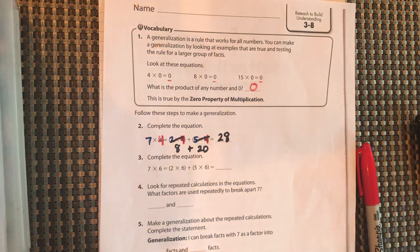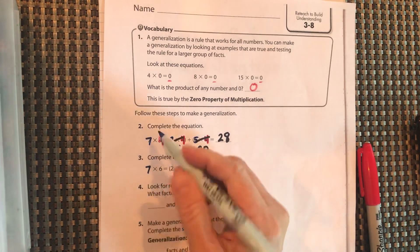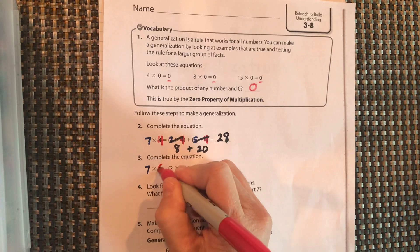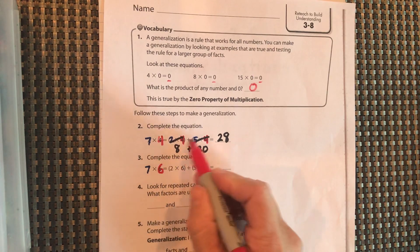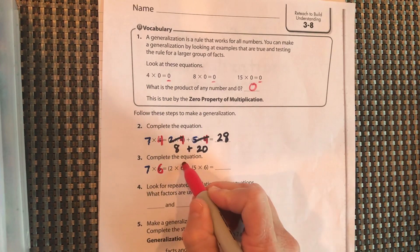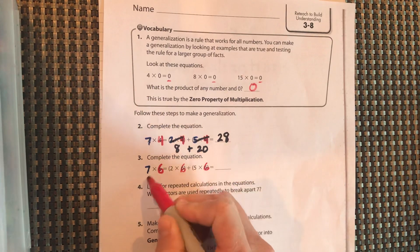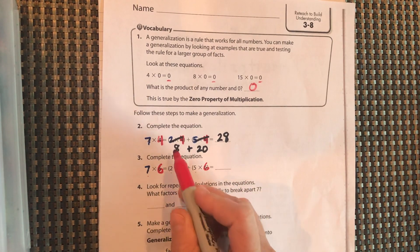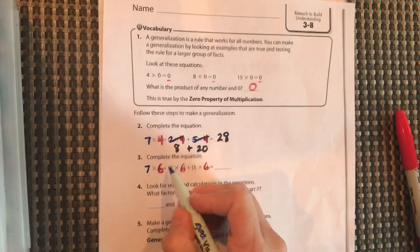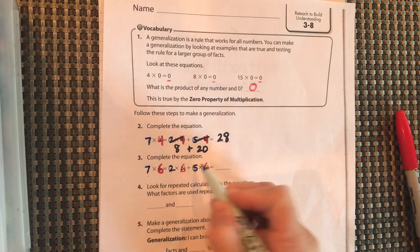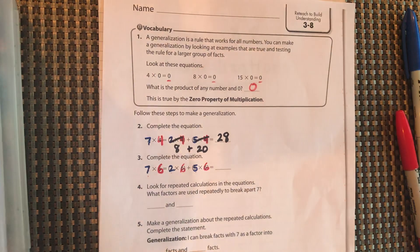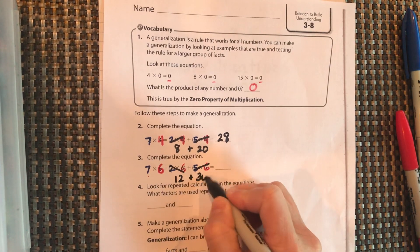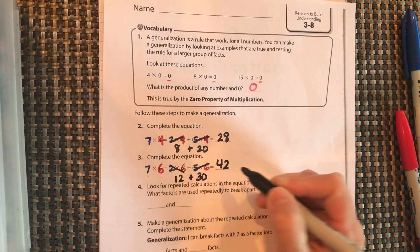We have 7 groups of 6. Very similar to the one up above. We still have 7. Our 6 is different, but we kept the 4 the same. Here we're going to keep the 6 the same. And again, we're breaking up that 7. So 7 is being broken up into 2 and 5, just like it was above. Now we work it out. And it equals 42.